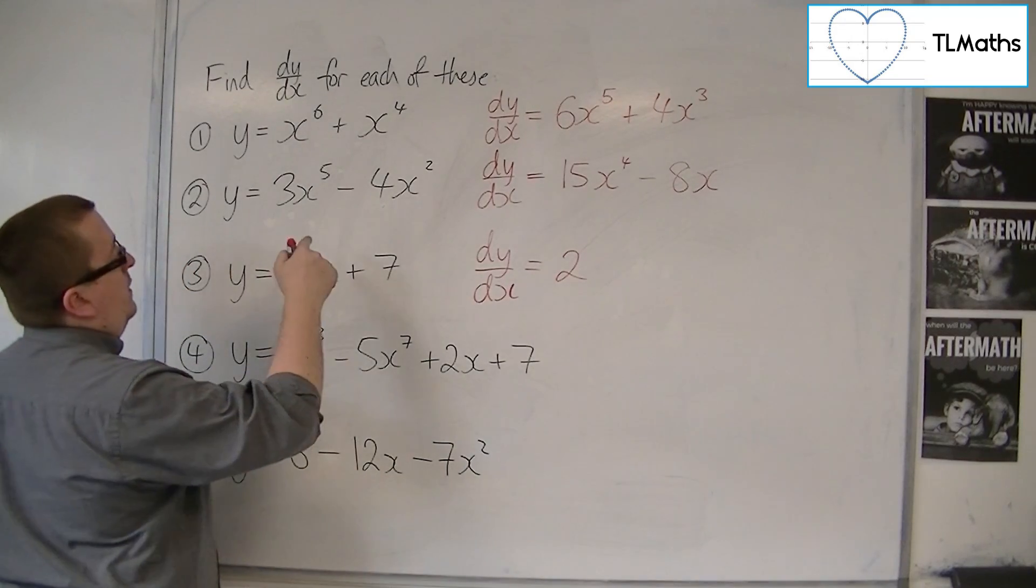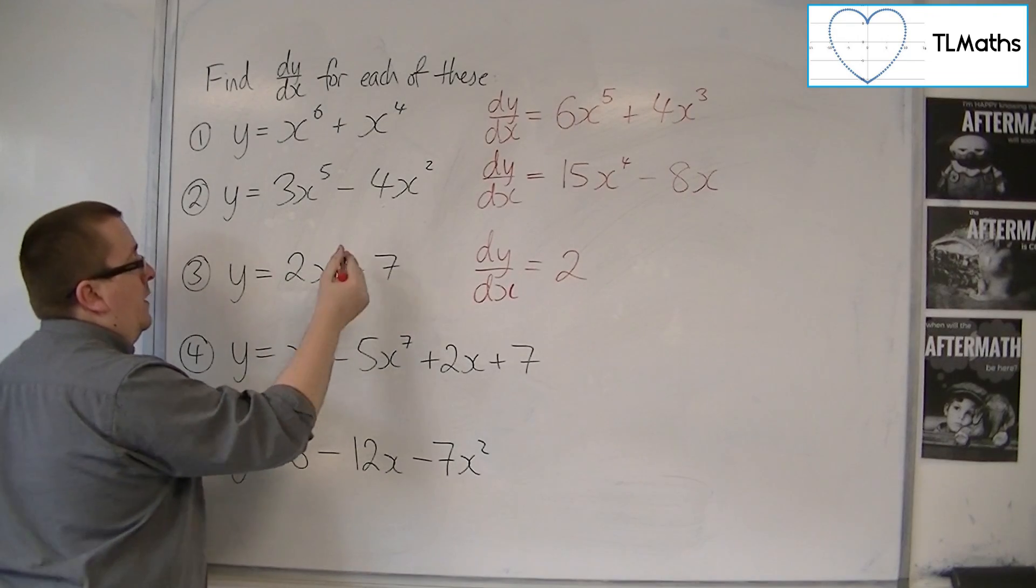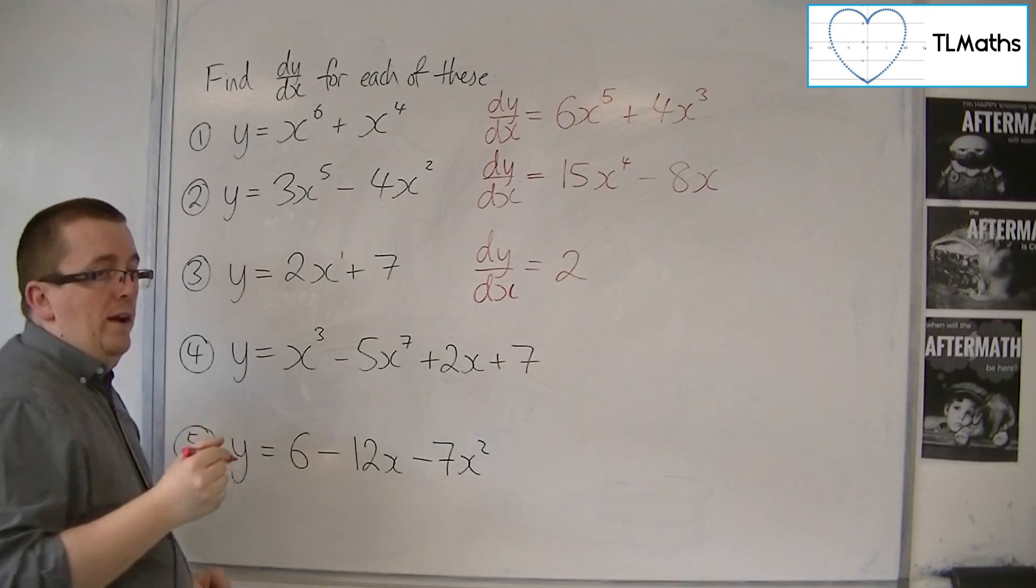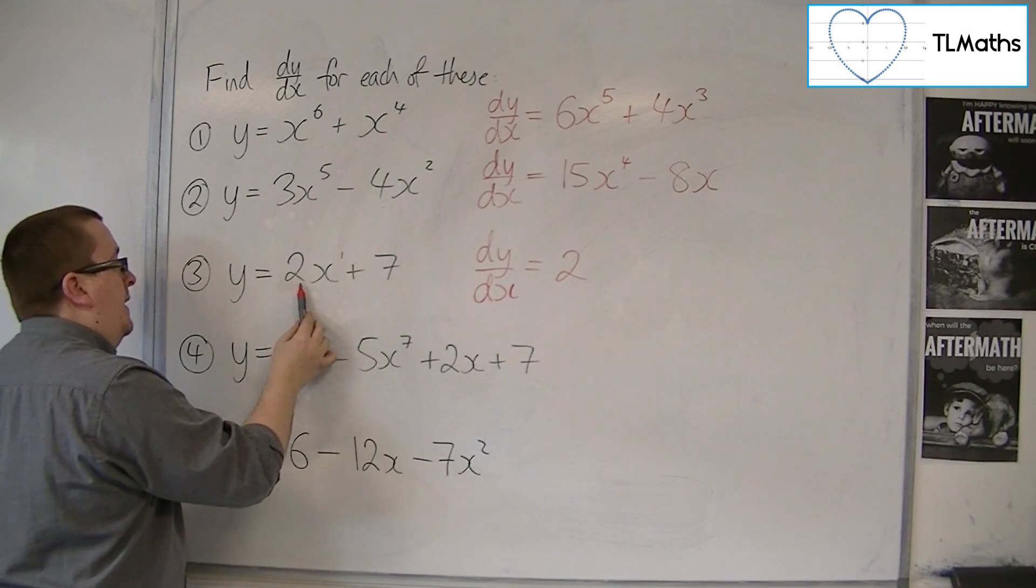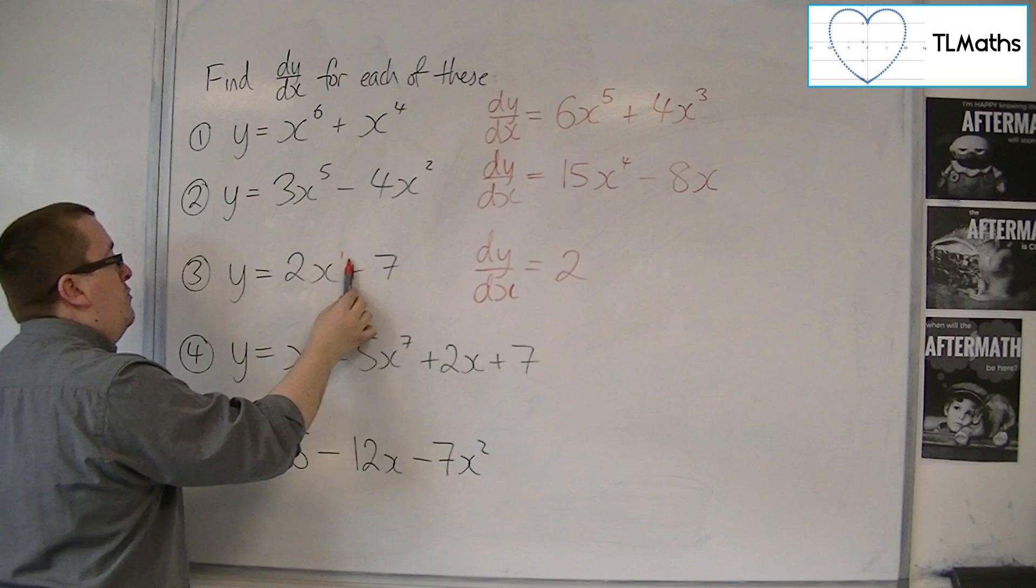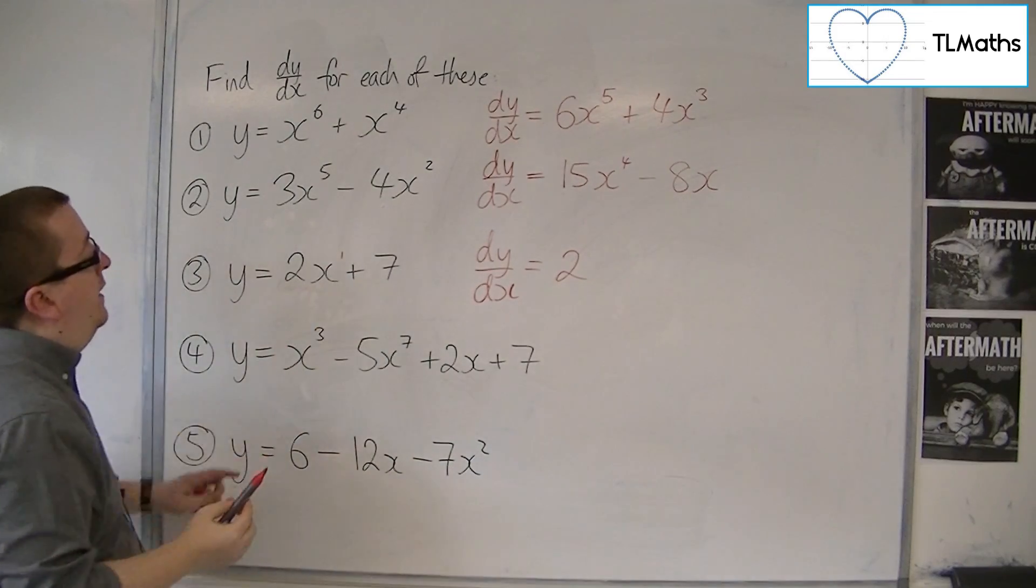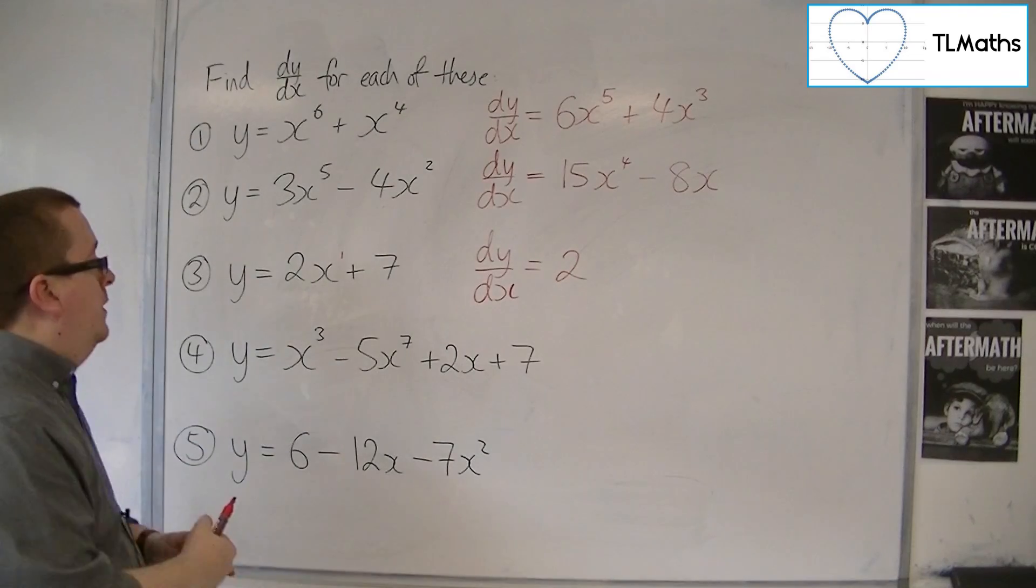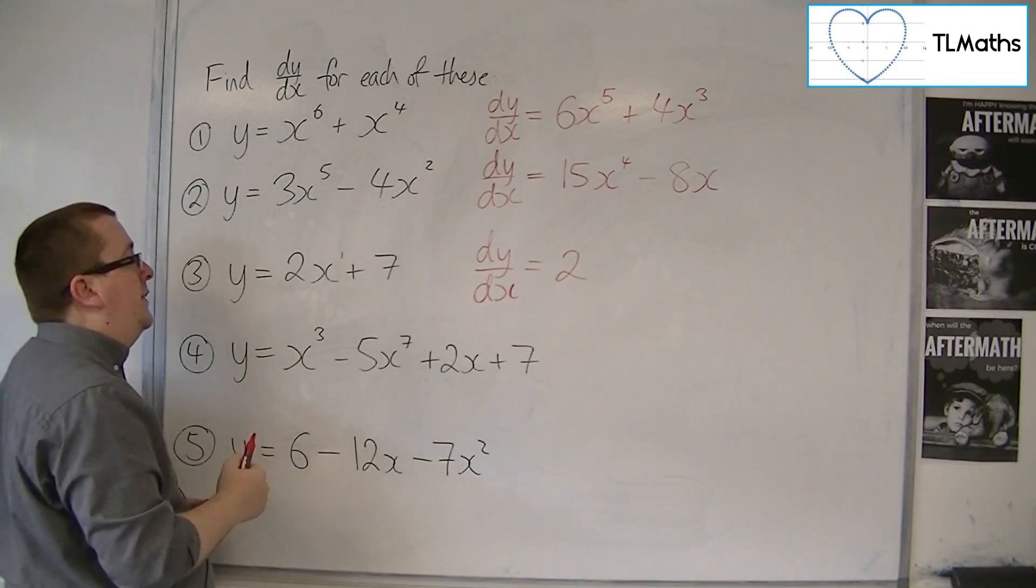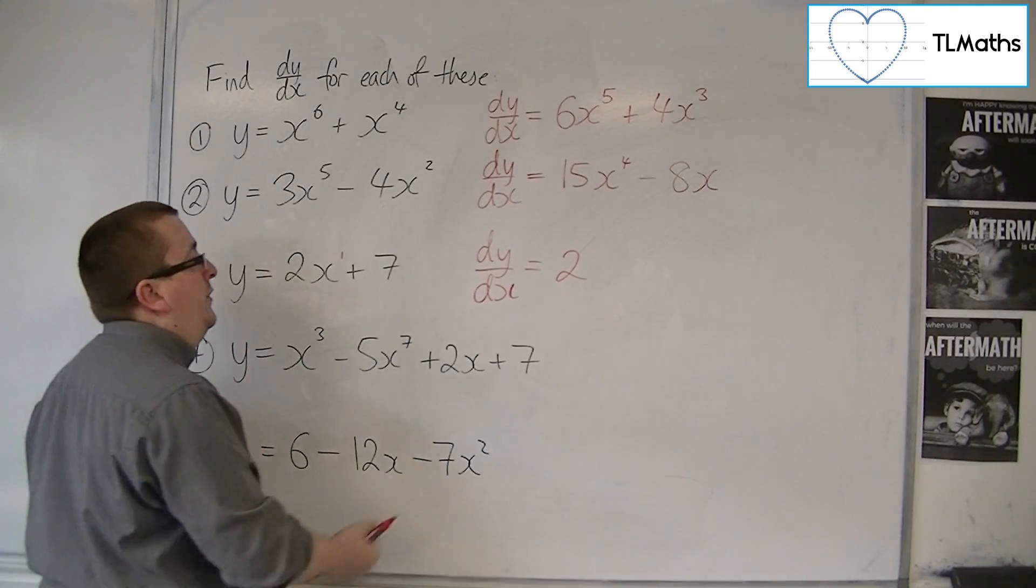We've got 2x, so that's effectively 2x^1. The 1 is coming down to the front, multiplies with the 2, and then I have x^0 because I take 1 off the power. And x^0 is just 1. So if you have 2x, it just differentiates to 2.